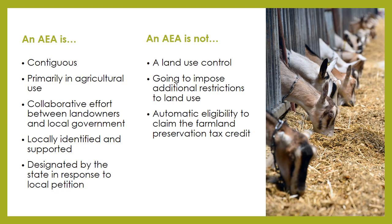AEAs are collaborative efforts between landowners and local governments. By working together, AEA petitions can help solidify the community's commitment to agriculture. The area is identified by the petitioners and local governments as being important to the agricultural heritage and identity of the area. Designation is done by the state in response to a locally prepared petition.